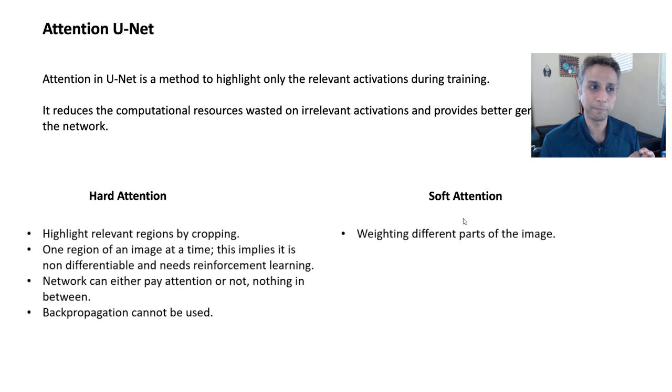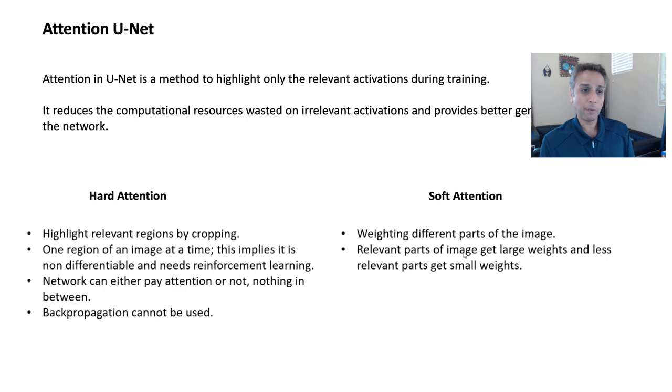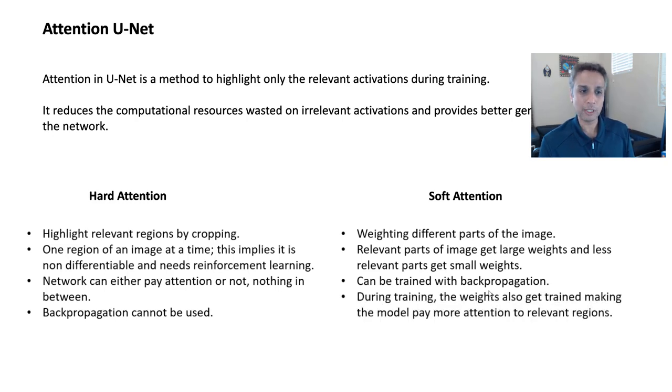Let's focus on soft attention. Soft attention refers to weighting different parts of the image. This is basically in summary, you're just giving weights to each part of your image. And relevant parts of image get large weights. Wherever there is a mitochondria, you hopefully will see larger weights, and less relevant parts get small weights. And this basically means we can train this using backpropagation.